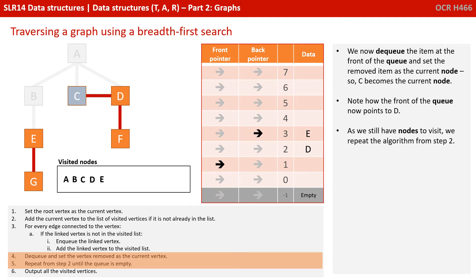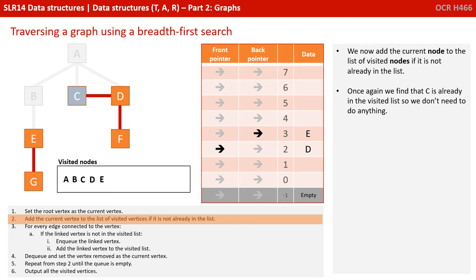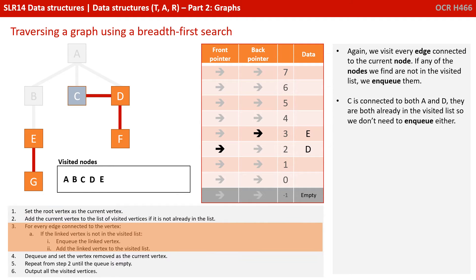We now dequeue the item at the front of the queue and set the removed item as the current node, so C becomes the current node. Note how the front of the queue now points to D. As we still have nodes to visit, we repeat the algorithm from step 2. We find C is already in the visited list, so we don't need to do anything. We visit every edge connected to the current node — C is connected to both A and D, and they're both already in the visited list, so we don't need to enqueue either.